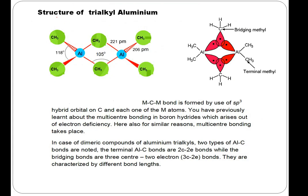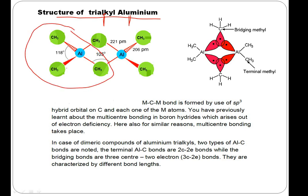Now let's move to another very important structure: trialkyl aluminum. It normally exists in the form of a dimer. As a dimer it becomes Al2Me6 — two aluminum groups and six methyl groups. One monomer is Al(CH3)3 and another monomer is Al(CH3)3, joined together to form the dimer.